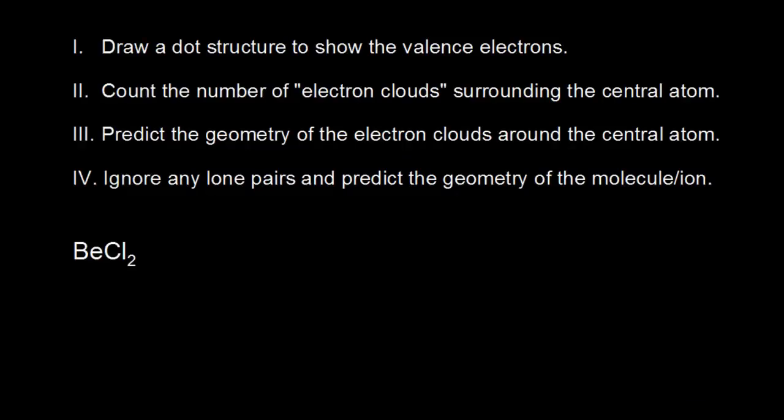In this next set of videos, we're going to predict the shapes of molecules and ions by using VSEPR, which is an acronym for valence shell electron pair repulsion. All this means is that electrons, being negatively charged, will repel each other — like charges repel. When those electrons around a central atom repel each other, they're going to force the molecule or ion into a particular shape. The first step for predicting the shape of a molecule or ion is to draw the dot structure to show your valence electrons.